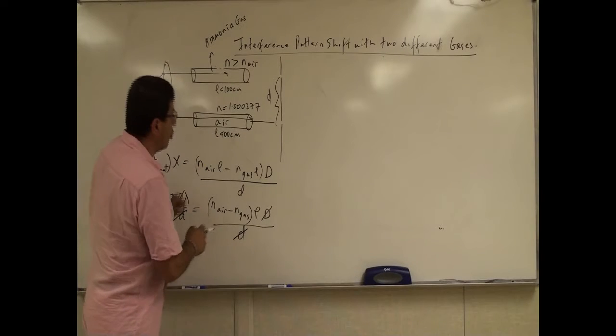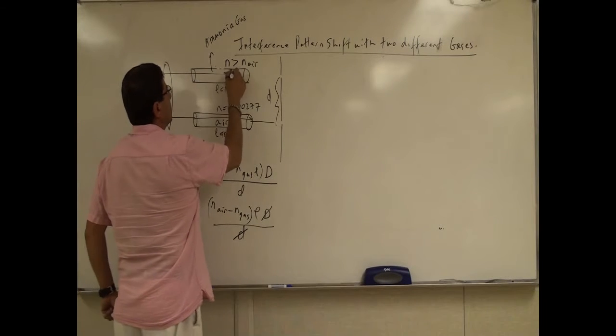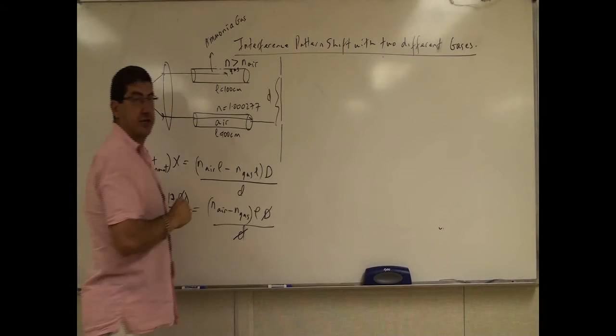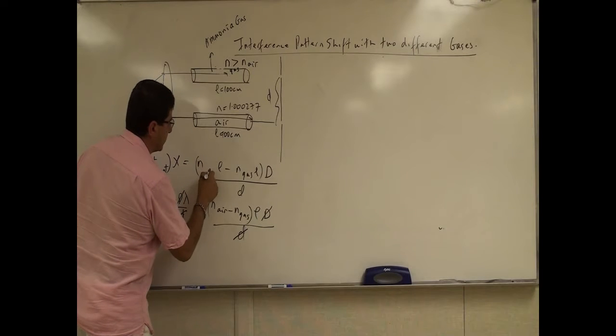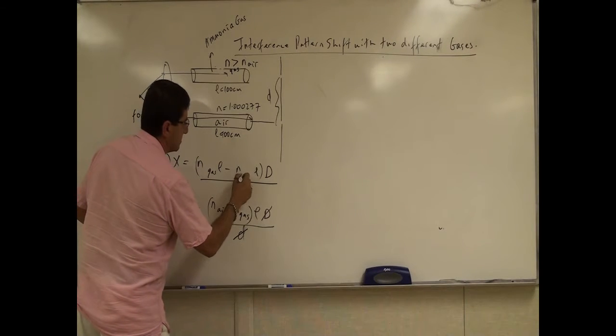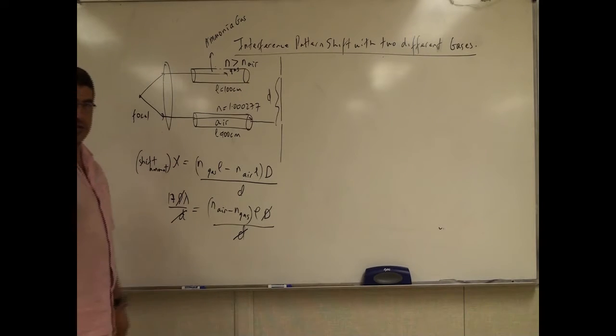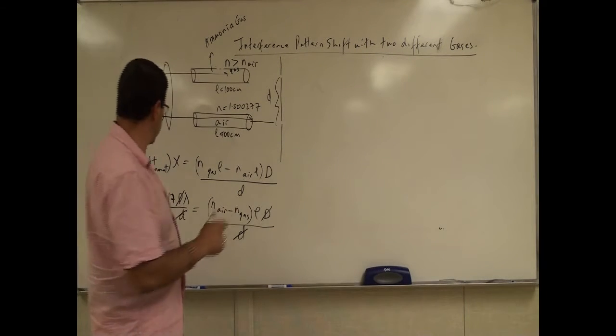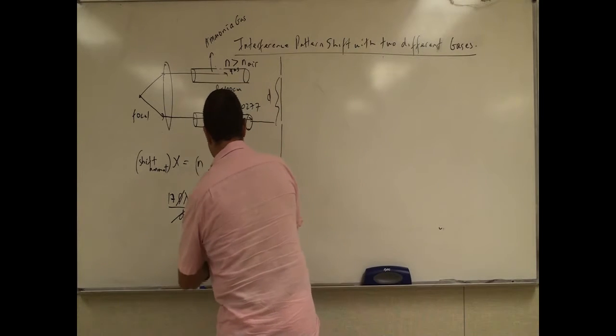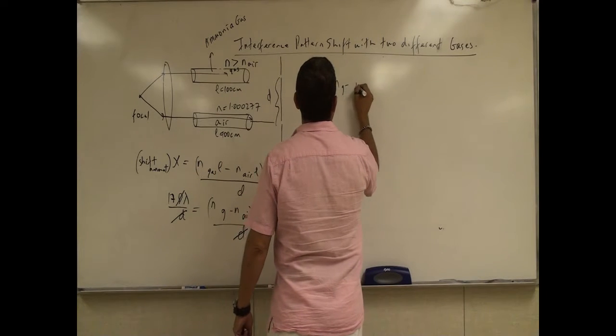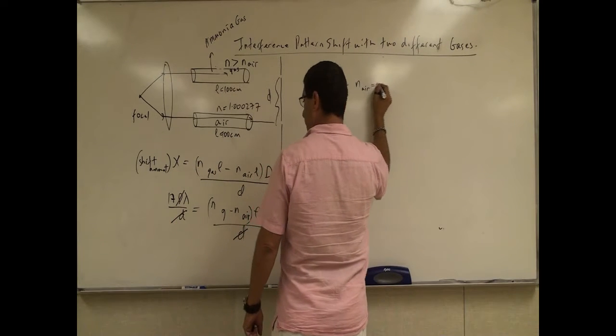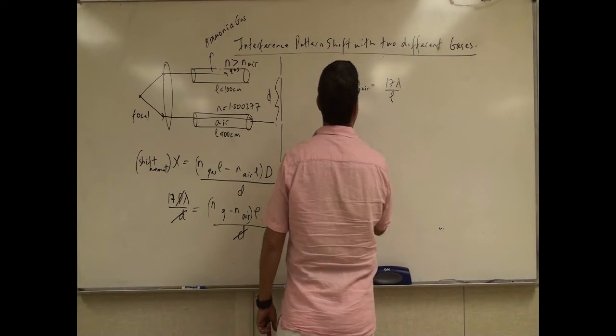And actually I have to change the order of this because remember we argued that the N of the gas is going to be greater than the N of the air because the shift amount was towards the gas. So then I have to say here N of gas minus N of air. So that's a little tricky point that you have to make sure you get depending on the shift amount. So N of gas L minus N of air L. So then I have to say let's derive a general equation here. N of gas minus N of air. So N gas minus N air is equal to 17 lambda over L.